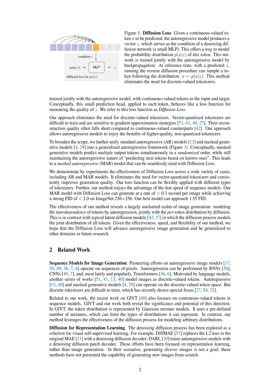By leveraging diffusion models to represent arbitrary distributions for each token, the approach allows autoregressive models to work with continuous-valued tokens, improving generation quality and eliminating the limitations and complexities associated with vector quantized tokenizers. Additionally, the method unifies standard autoregressive models and masked generative models into a generalized autoregressive framework, enabling the prediction of multiple output tokens simultaneously in a randomized order while maintaining the autoregressive nature.